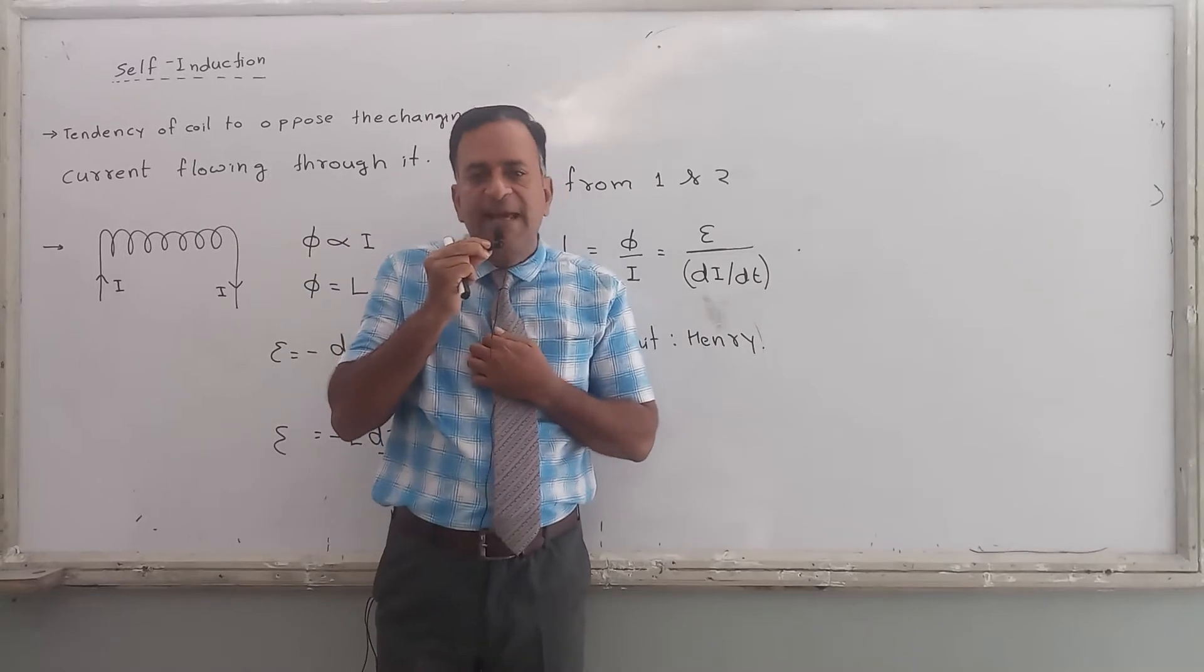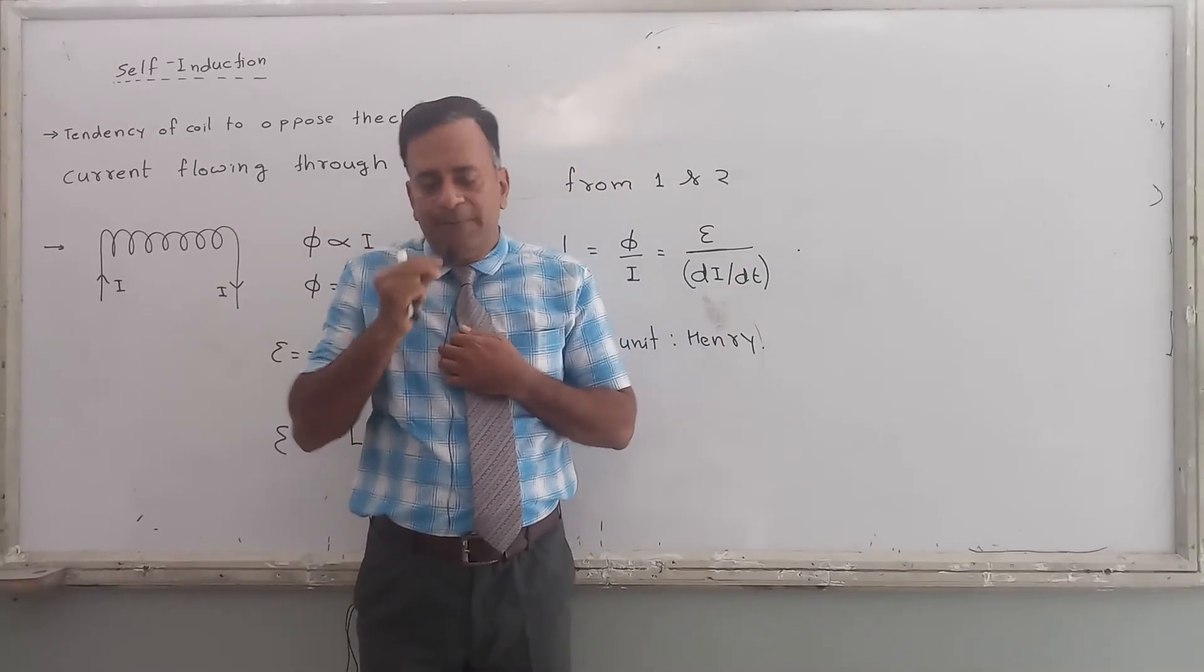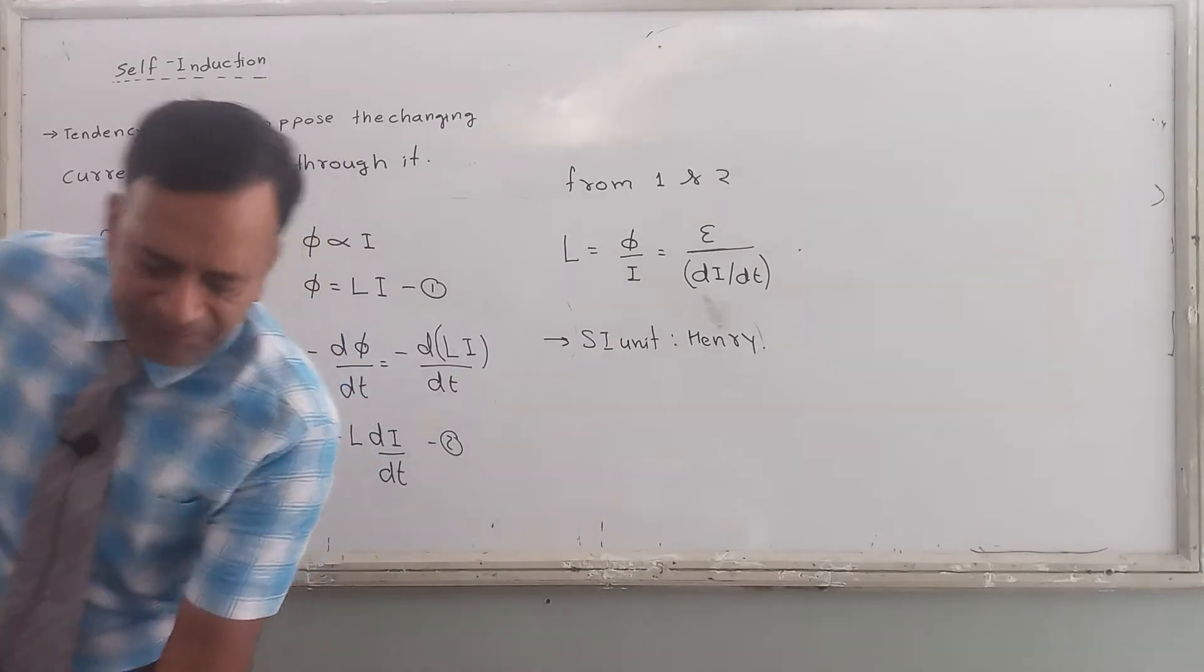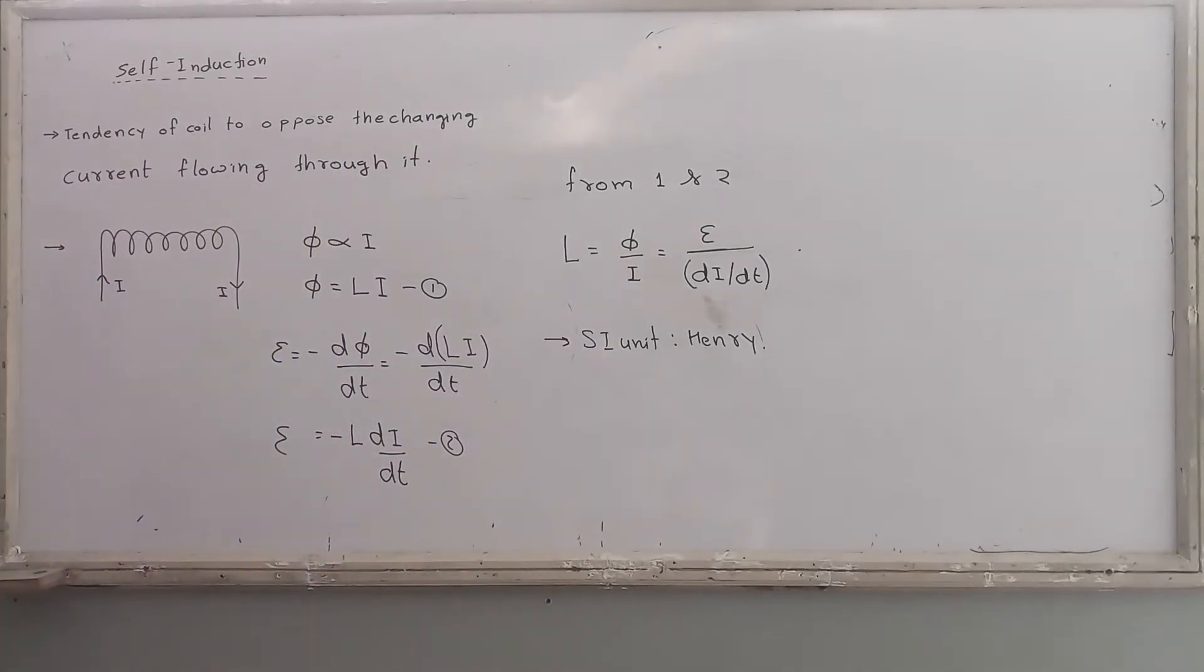What is the self-induction phenomenon? In this given circuit, here we have a solenoid, or we can call it coil. The current is passing through this solenoid. Solenoid is varying current, it is not constant, it is varying current.